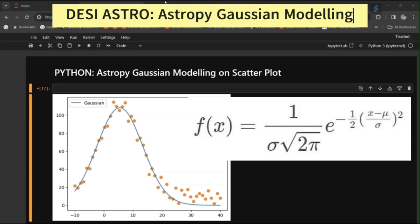Welcome to DESI Astro. In this Python tutorial, I am going to show you how to fit a Gaussian model on a scatterplot and obtain its amplitude, its mean, and its standard deviation value by fitting a package called AstroPy modeling on a scatterplot.